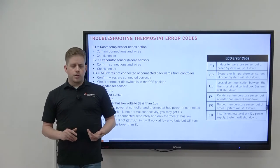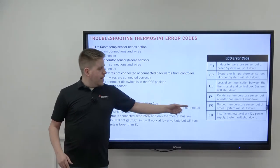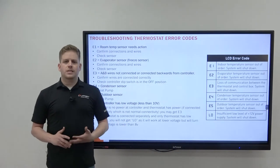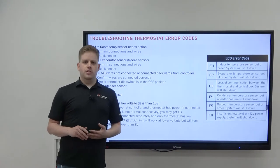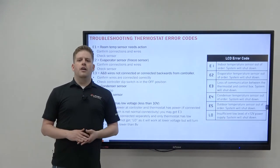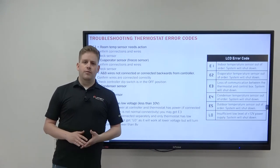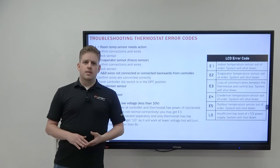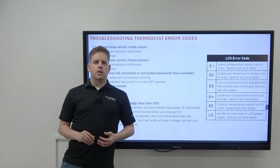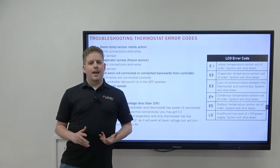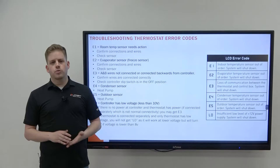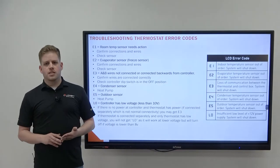The final error code is LO, which stands for low DC voltage to the system — DC voltage below 10 volts. Simply look at your DC power source from the coach and correct it, or correct the loose connection as necessary.